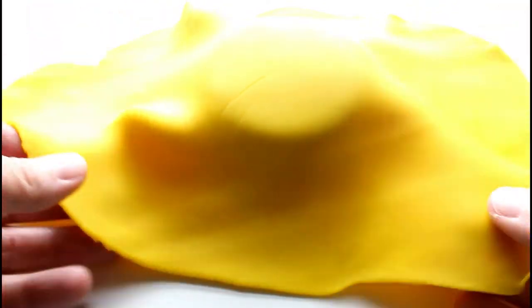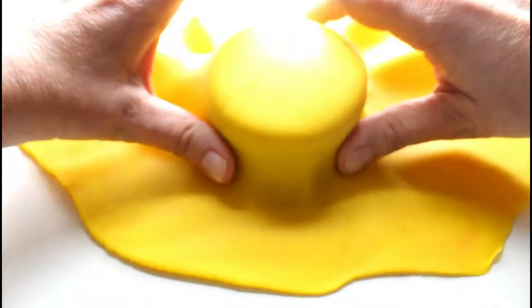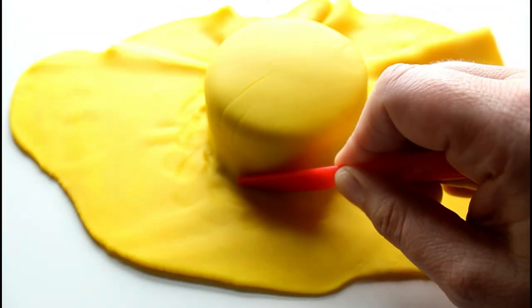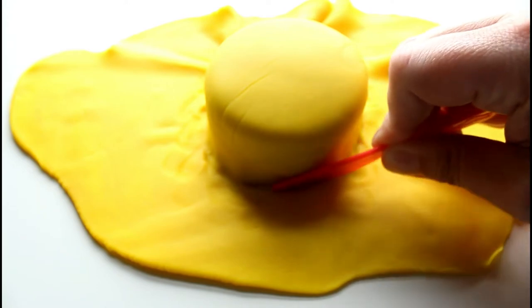Now that I have my yellow play-doh smoothed out super thin and very smooth, we're gonna place it on top. Now that we have the icing draped over our cake, we're gonna use our play-doh knife and cut around the edges.